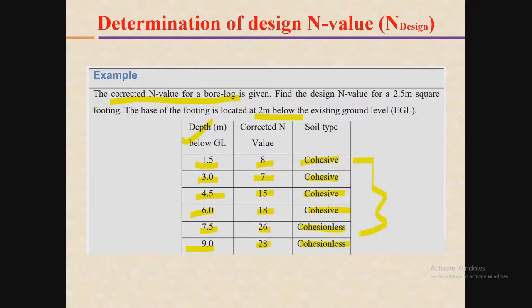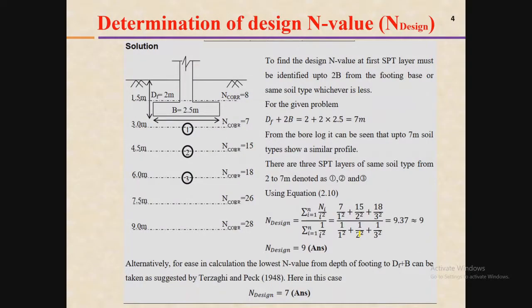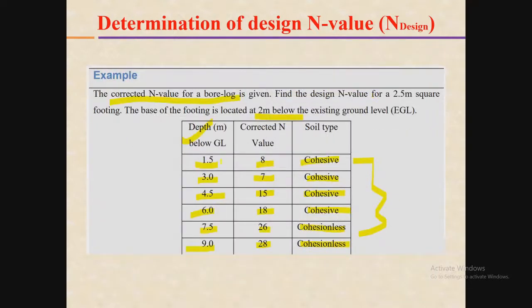Now, how do we decide the depth for determination of the design N value? I have two criteria. Criteria number one: find the design N value where the first SPT layer must be identified up to the same soil type from the footing base, whichever is less. Looking at that slide, up to a depth of 6 meters from the existing ground level we have the same soil type, which is cohesive. So one depth selected is 6 meters.